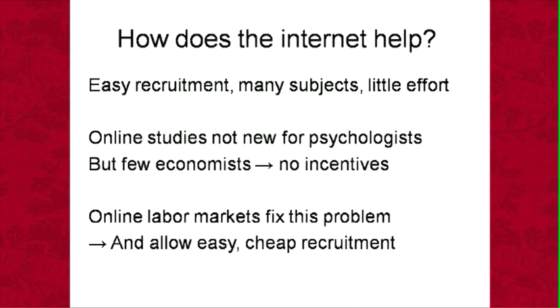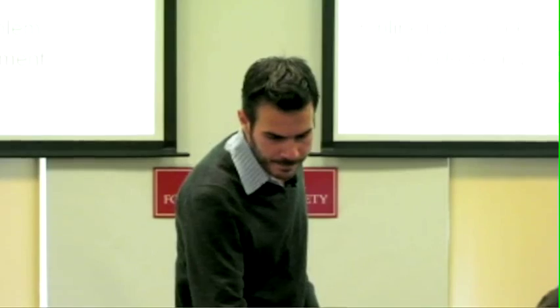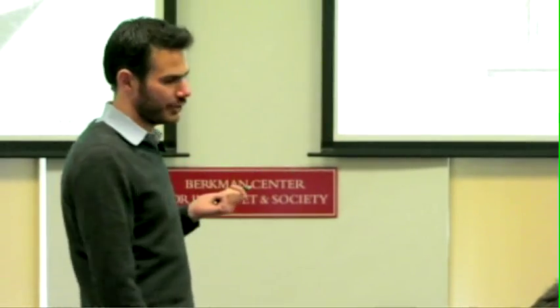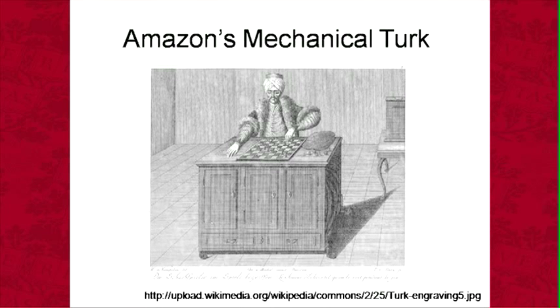That's where online labor markets come in. You can recruit people online to do tasks, pay them, and there's payment infrastructure for performance-dependent payments. I'm particularly going to focus on Amazon Mechanical Turk. The original mechanical turk was a chess-playing robot from the 1700s — apparently good artificial intelligence — that turned out to actually have a person hiding inside the box operating it. That's a good way to get a 'robot' to do things hard for computers but easy for people.